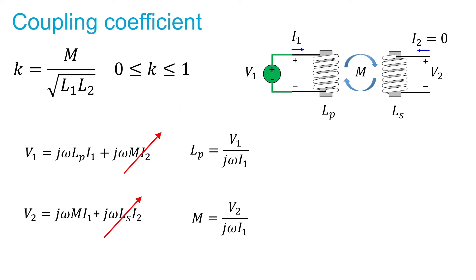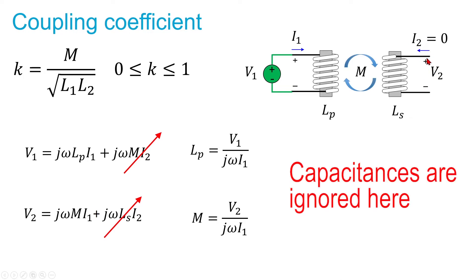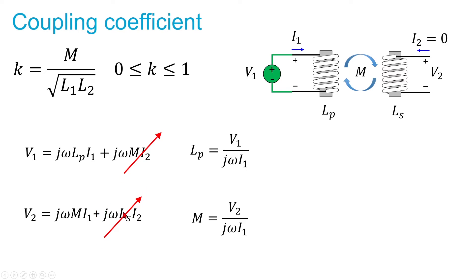We are going to perform two measurements. In the first measurement, we let the secondary coil be open. If the secondary is open, the current through it is zero, so those terms are eliminated. Connecting an LCR meter to the primary coil, V1 = jω·LP·I1, and from this we can easily calculate LP = V1 / (jω·I1). This is what the LCR meter does for you, giving you the primary inductance. You could also measure V2 with an oscilloscope to calculate mutual inductance directly, but we want to use only one LCR meter.